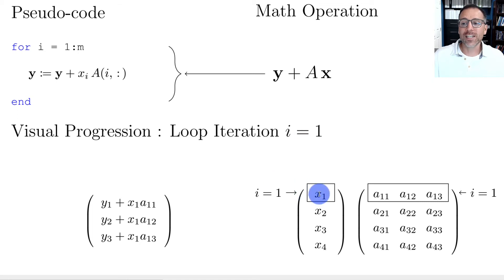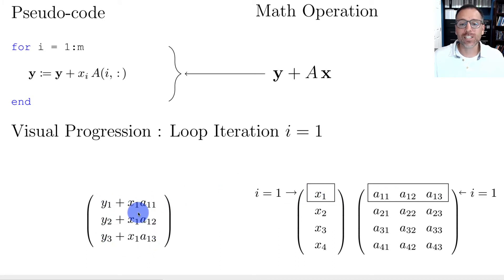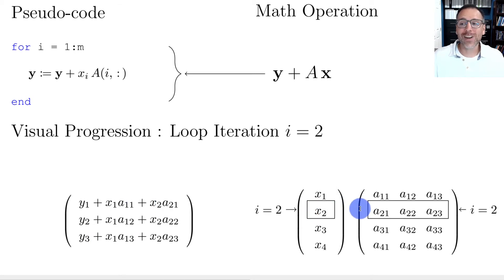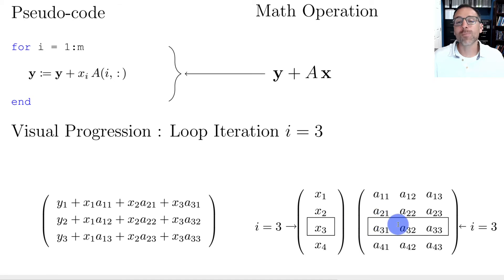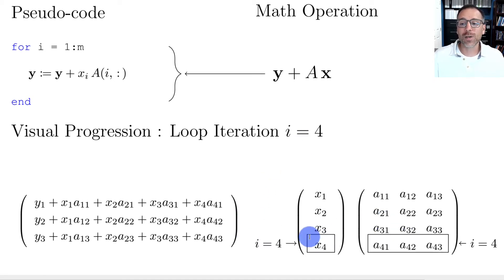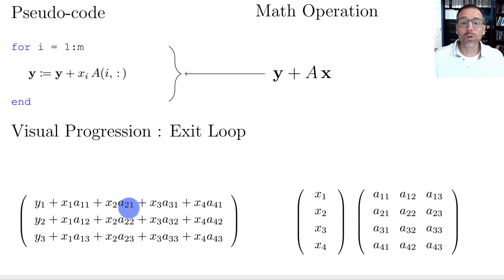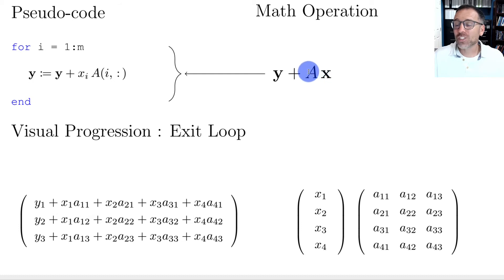Once initialized, we drop into the first loop iteration where i=1: we multiply x_1 by the entire first row of A and add that product to the previous y. In iteration 2, the second entry of x multiplies the entire second row and is added. We continue through the third, and finally the last iteration, obtaining the full linear combination — exactly what we expect for the row-vector-matrix product.